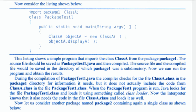During the compilation of PackageTest1.java, the compiler checks for the file ClassA.class in the package one directory for information it needs, but it doesn't actually include the code from ClassA.class in the file PackageTest1.class. When the PackageTest1 program is run, Java looks for the file PackageTest1.class and loads it using something called the class loader.